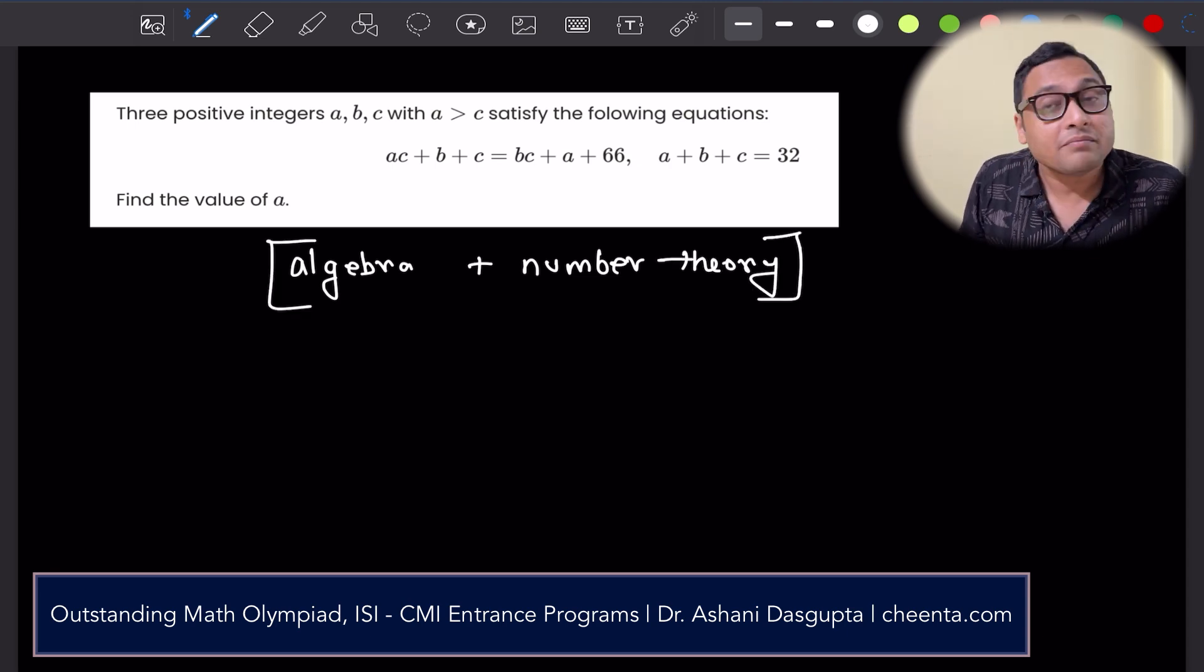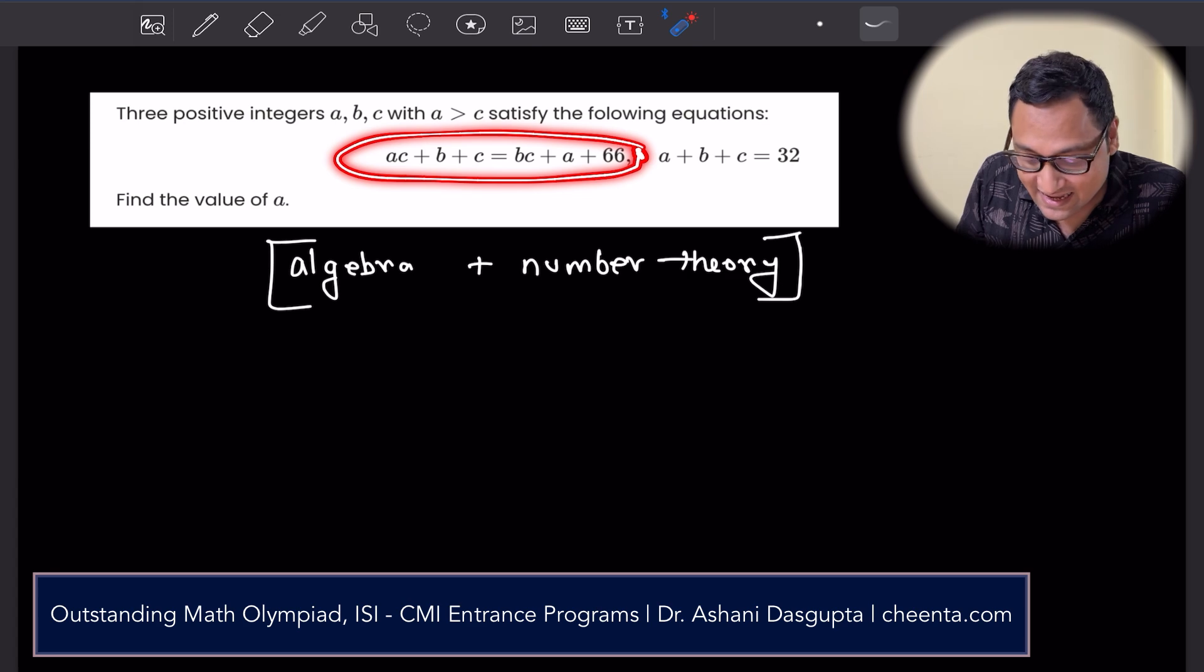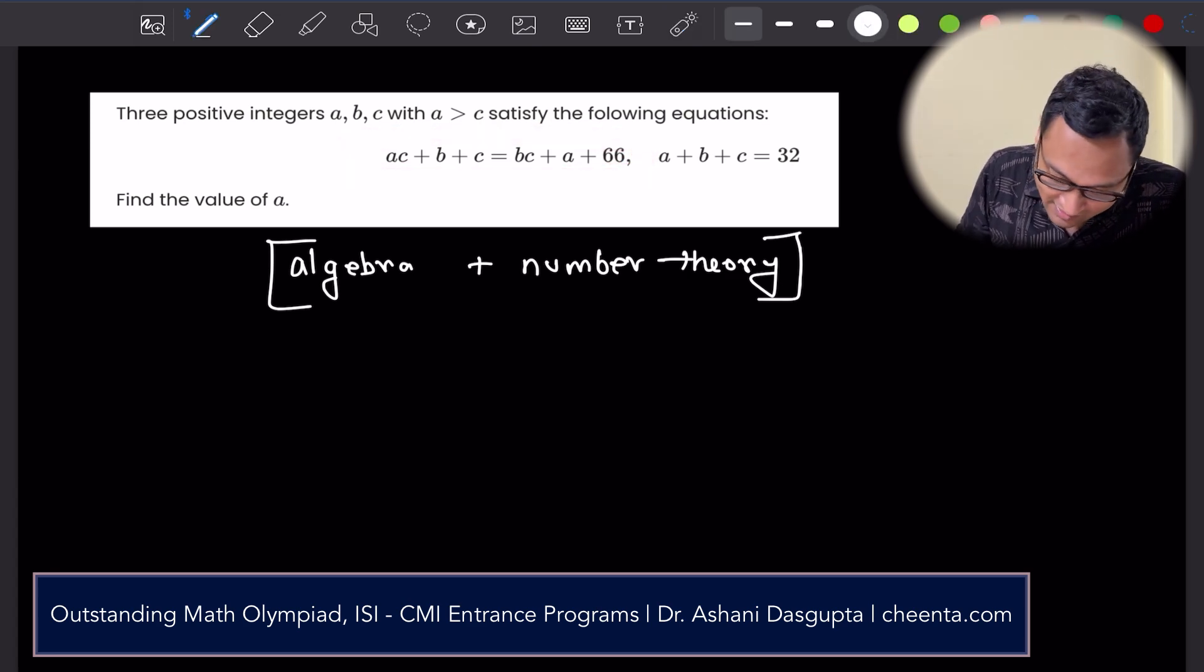It says that there are two equations: ac + b + c is equal to bc + a + 66. So ac + b + c is equal to bc + a + 66.